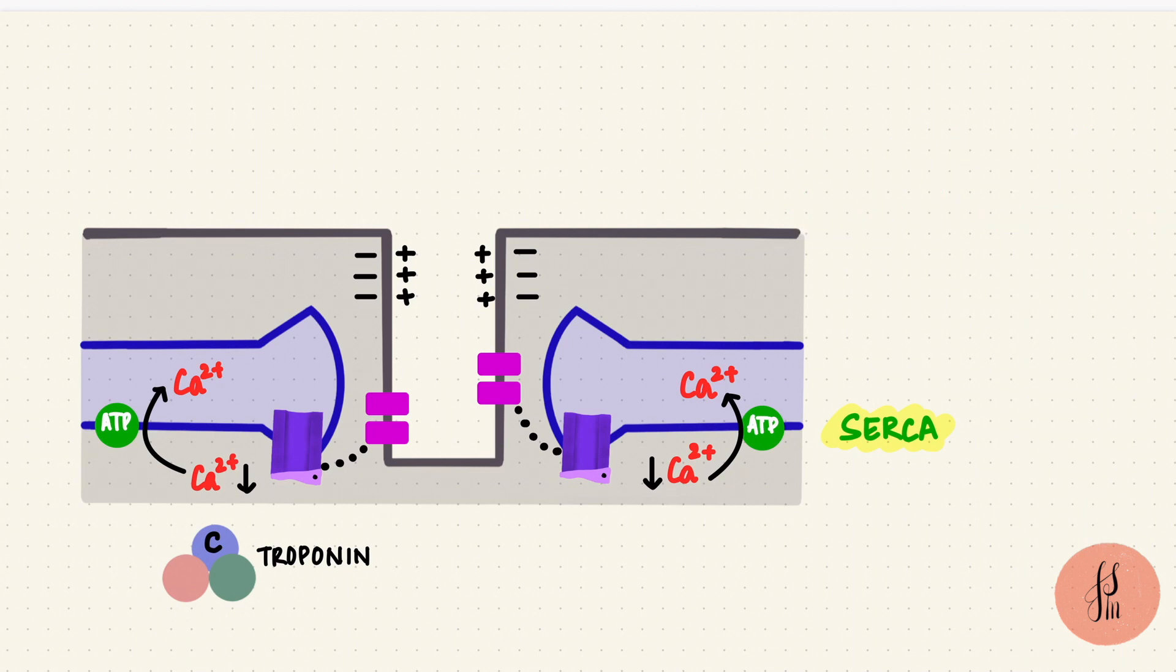A lot of the calcium inside the sarcoplasmic reticulum is bound to calsequestrin, which is a calcium binding protein. That keeps the bound calcium in the sarcoplasmic reticulum high compared to the free calcium that reduces the work of the pump. So when the calcium level in the sarcoplasm comes down, the cross bridges stop forming and the muscle relaxes.